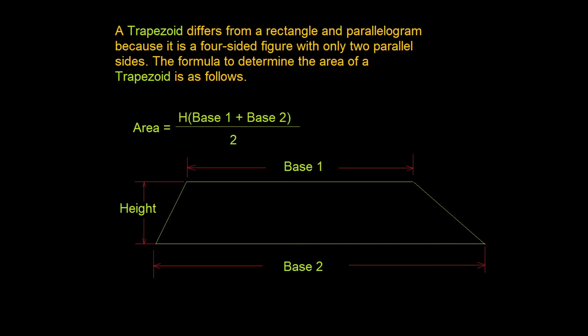So the base, the height, those are all parallel. In a trapezoid, it's different. These sides are not parallel. They can be any angle. So the way that we figure that out is we take the height times the base plus this base divided by 2.